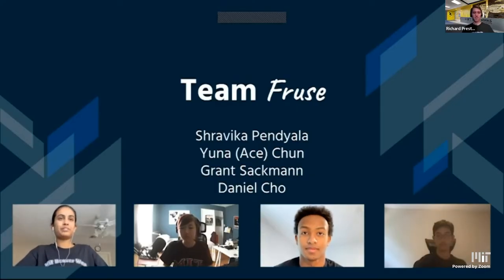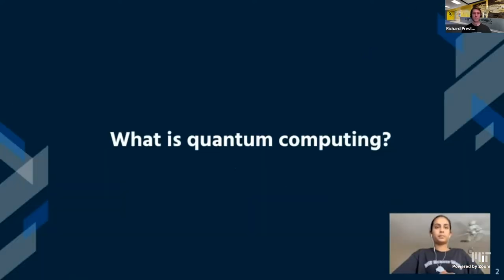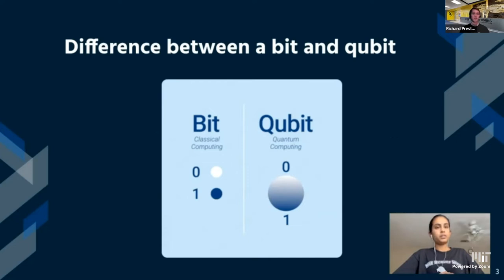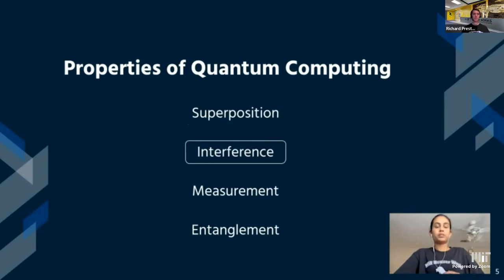Hello, we are team Fruz from Quantum Software. My name is Shravika Pindiala. I'm Una Chun. I'm Grant Sackman. And I'm Daniel Cho. For our BWSI final project, we explored the variational quantum classifier. Before we begin explaining this algorithm, let's first talk about what quantum computing is. Quantum computing is a new and exciting area of computing where principles of quantum mechanics are applied. Quantum computing uses units of data known as qubits or quantum bits. While a normal bit must be either a 1 or a 0, a quantum bit can be in a probabilistic state of both a 0 and a 1 — this is called superposition, the first fundamental property.